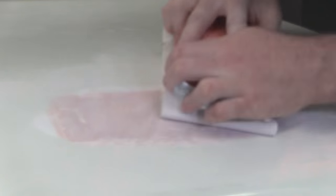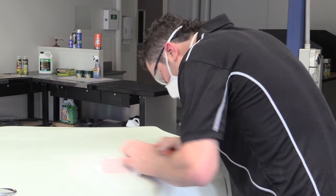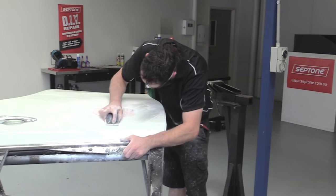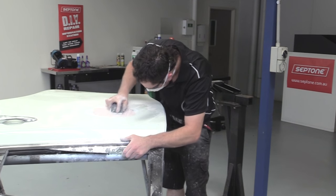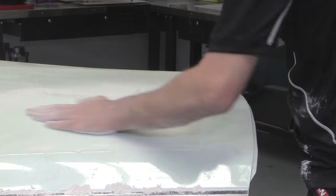Feather the edges of the filler with 180 to 240 grit paper to achieve a smooth finish in preparation for primer. Swap between sandpaper grits if required when feathering edges. Feel the surface as you sand it to ensure the repair is smooth.